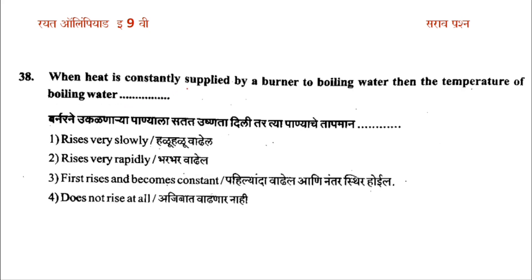The question is: when heat is constantly supplied by a burner to boiling water, then the temperature of the boiling water does what? Options are: rises very slowly; rises very rapidly; rises then becomes constant; does not rise at all. The answer is: it does not rise at all — when water is boiling, the temperature does not rise.